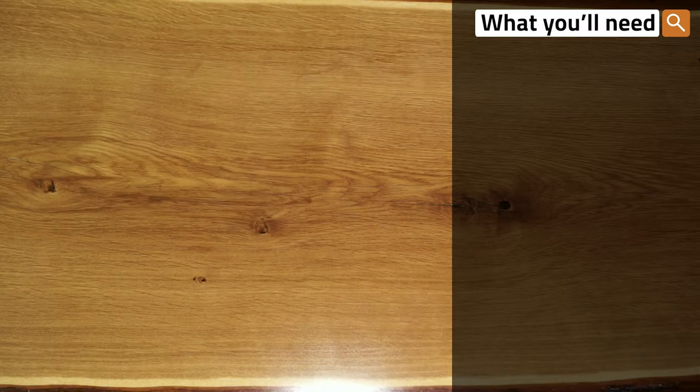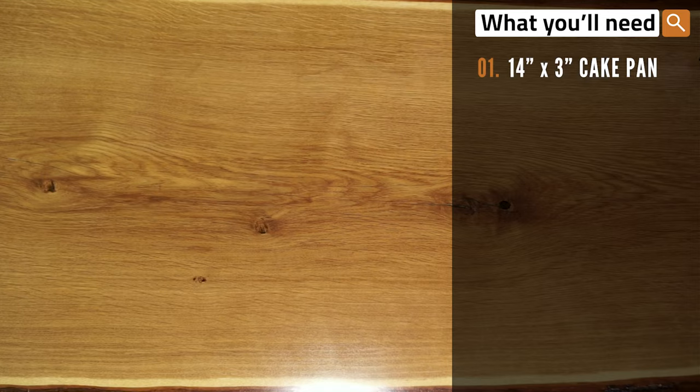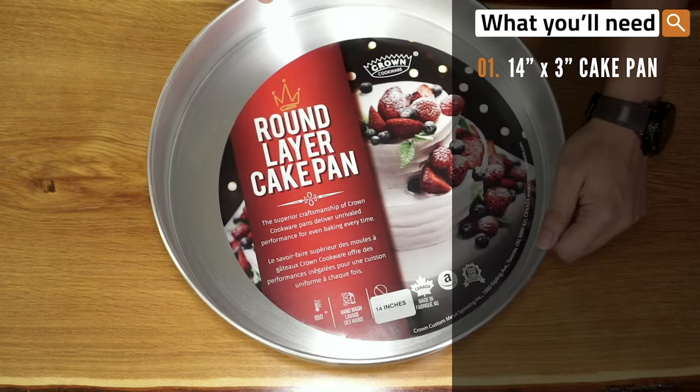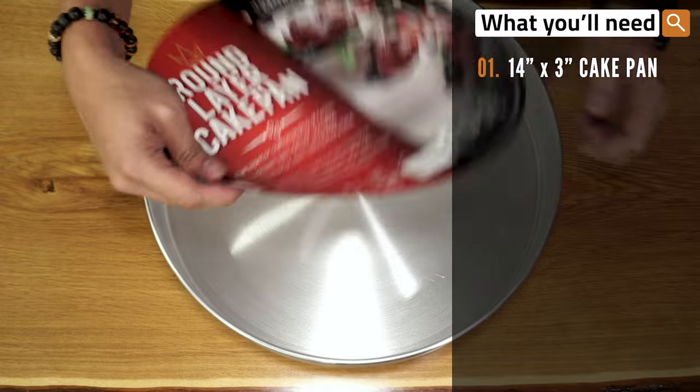Let's start by going over the things that you'll need. Starting with the 14-inch wide by 3-inch deep aluminum round cake pan.